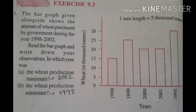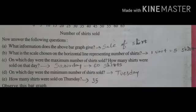Now let's see question number 2. This bar graph shows the sale of shirts in a readymade shop from Monday to Saturday. Dear students, look in the textbook at page number 199, second question. Here in the graph one side has the days — Monday, Tuesday, Wednesday — and the other side has the number of shirts sold. One unit length equals five shirts, that means one unit means five shirts there.